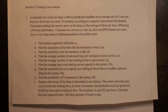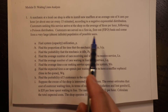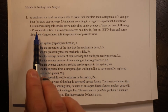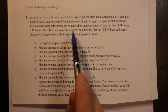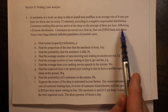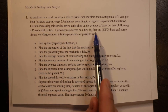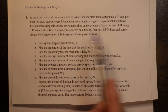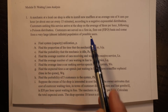The first problem: a mechanic at a local car shop is able to install mufflers at an average rate of four cars per hour, or about one car every 15 minutes, according to a negative exponential distribution. Customers seeking this service arrive at the shop at an average of three per hour following a Poisson distribution. Customers are served on a first-in first-out basis and come from a very large, almost infinite, population of possible users.